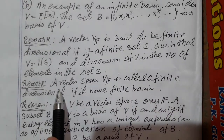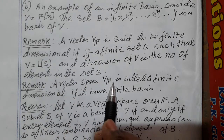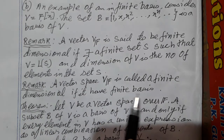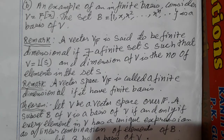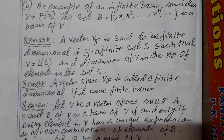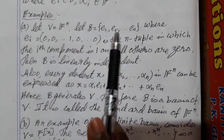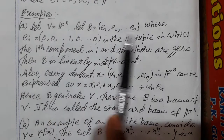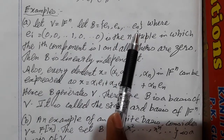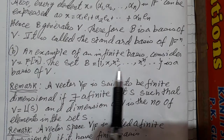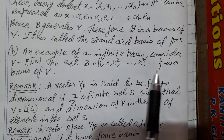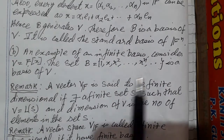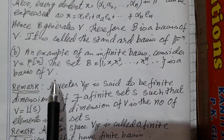Remark two: a vector space VF is called finite dimensional if it has a finite basis. So we say it is finite dimensional if the number of elements in the basis set is finite. Otherwise, if the number of elements in the basis set is infinite, then we say it is an infinite dimensional vector space. The polynomial vector space example here is of infinite dimension because it has an infinite number of basis elements.